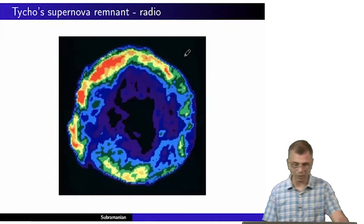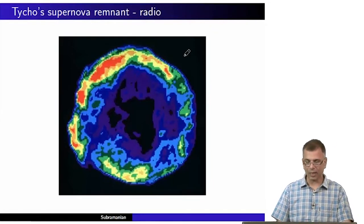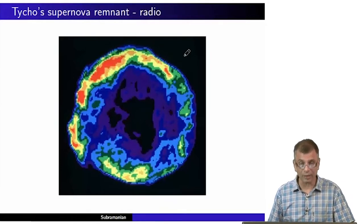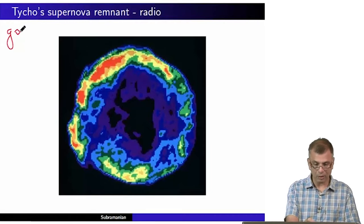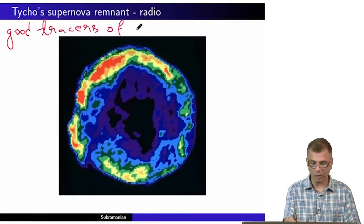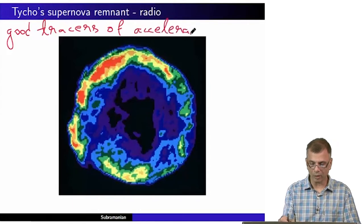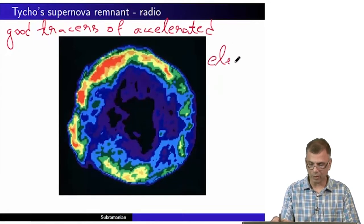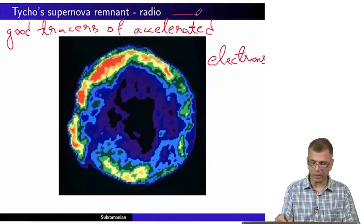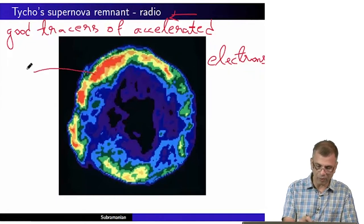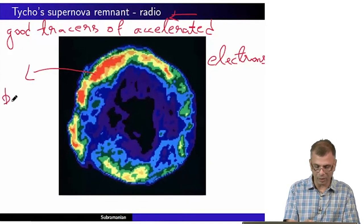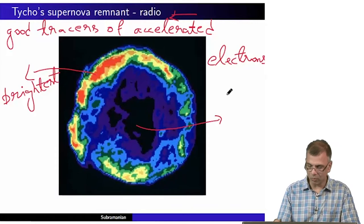This is the same object in radio, at radio wavelengths. The specialty of radio wavelengths is that they are very good tracers of accelerated electrons — of accelerated electrons. That is what radio wavelengths are good for. This picture's color code is that red would be brightest and deep blue would be dimmest.